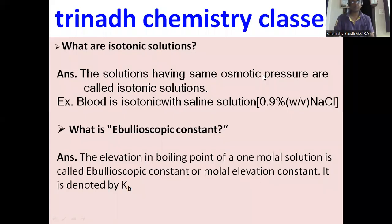First question: What are isotonic solutions? The solutions having the same osmotic pressure at a given temperature are called isotonic solutions. For example, blood is isotonic with a saline solution, that is 0.9% weight by volume NaCl.